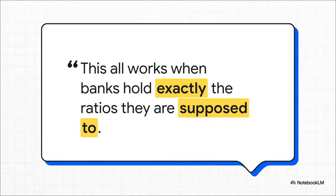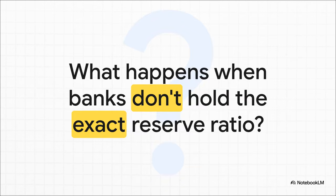It's really important to remember that this whole mechanical process works based on one giant assumption: that banks are playing by the rules perfectly, holding exactly the reserve ratio they're supposed to — not a penny more, not a penny less. That leaves us with one final big question: this clean model works great in theory, but what happens in the real world when banks get nervous and decide to hold extra reserves just in case? Or when they get optimistic and try to lend out as much as possible? What happens when reality gets messy?